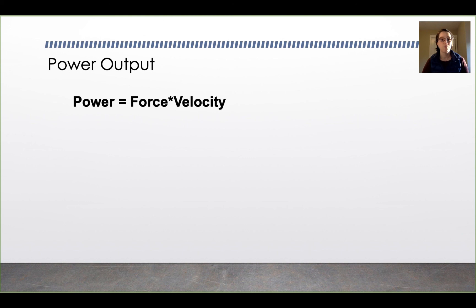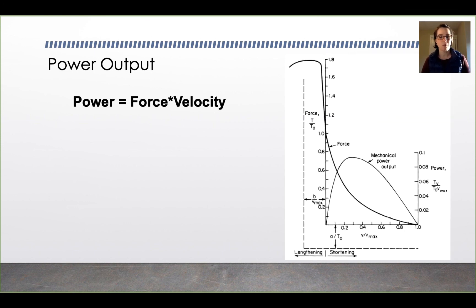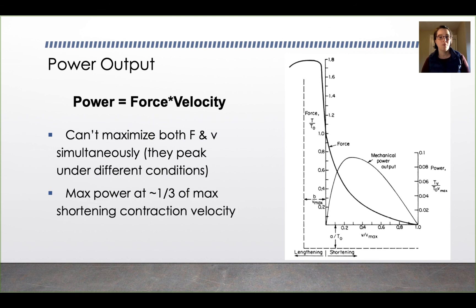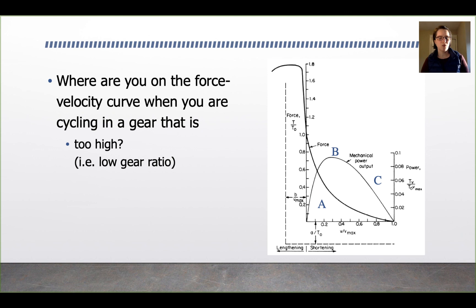Finally, let's talk about muscle power. Power equals force times velocity. Overlaying mechanical power output onto the force-velocity curve, the power output is zero when velocity is highest (because force is zero) and zero again when velocity is zero and force is greatest. You can't maximize both force and velocity simultaneously because they peak under different conditions. Maximum power occurs at about one-third of the maximum shortening contraction velocity.